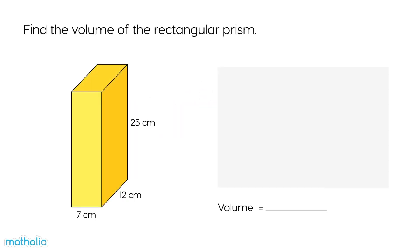Find the volume of the rectangular prism. Recall that the volume of a rectangular prism can be found by multiplying length by width by height. This rectangular prism has a length of 7 centimetres, a width of 12 centimetres, and a height of 25 centimetres.